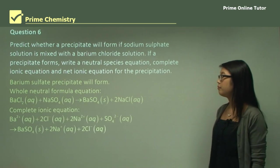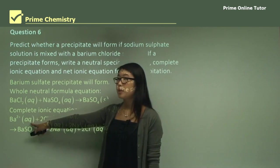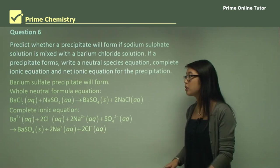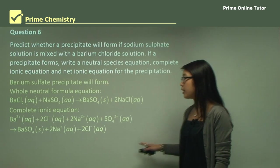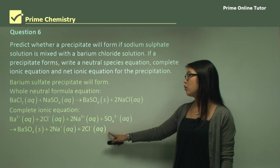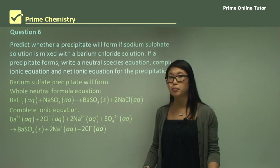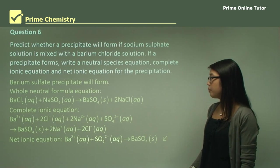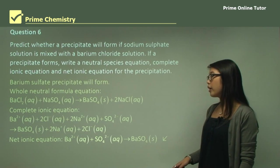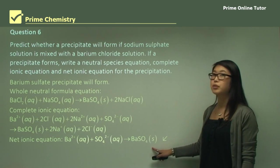For the complete ionic equation, everything is in aqueous solution and separate: barium (aq), chloride (aq), sodium (aq), and sulfate (aq) — all ions. When they react, we get solid barium sulfate written in molecular form, with the remaining sodium and chloride ions as positive and negative charges in aqueous solution. For the net ionic equation, we remove the spectator ions — chloride and sodium — leaving only barium (aq) plus sulfate (aq) forming solid barium sulfate precipitate.